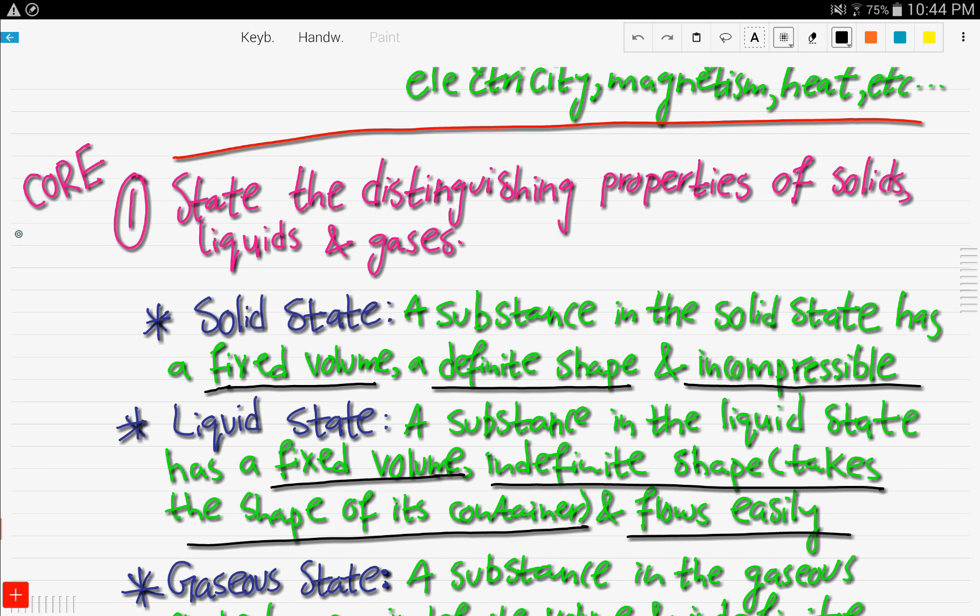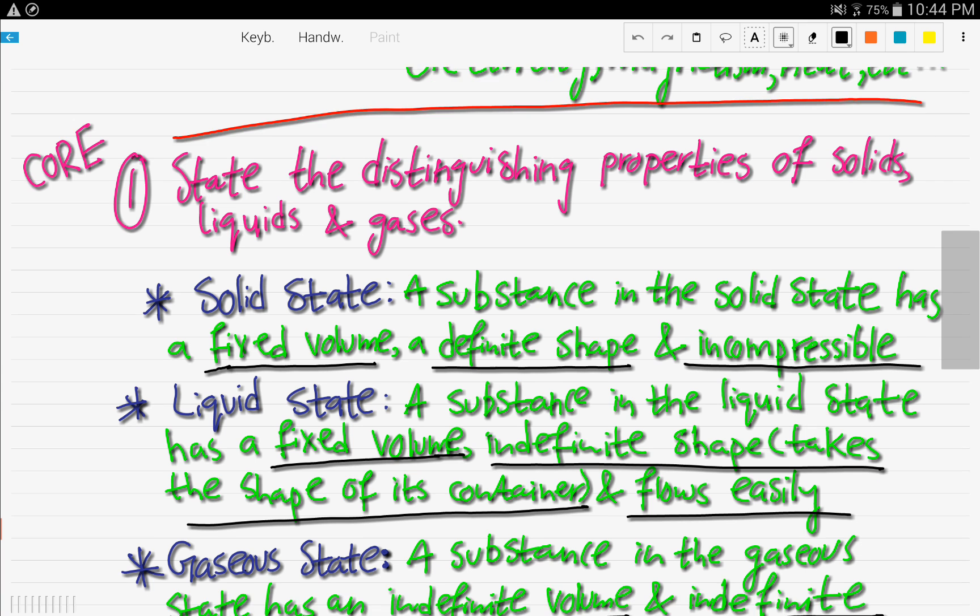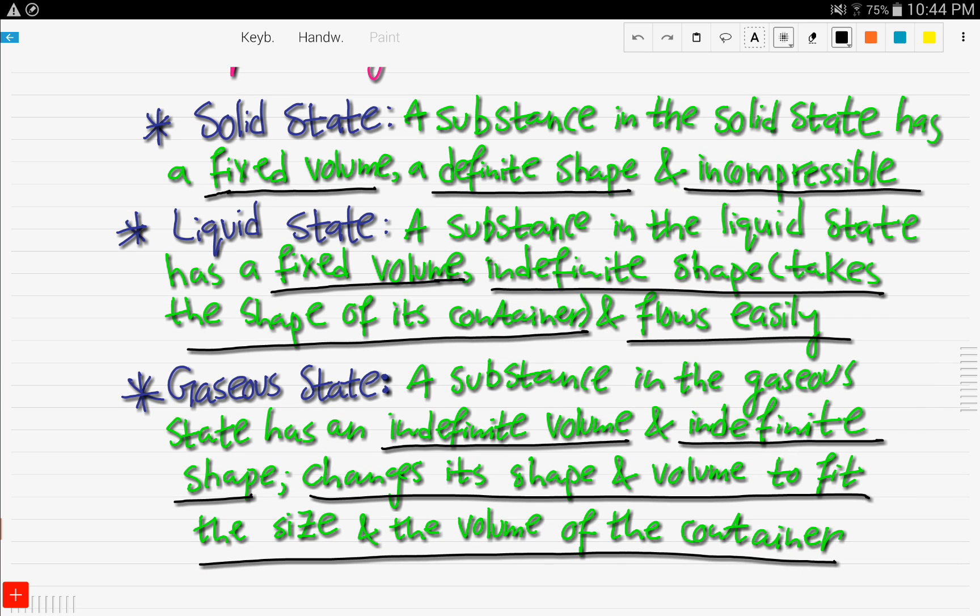The first objective is core. State the distinguishing properties of solids, liquids and gases. Solid state: a substance in the solid state has a fixed volume, a definite shape, and is incompressible. So these are the three distinguishing features of solid. Fixed volume, definite shape, and incompressible.